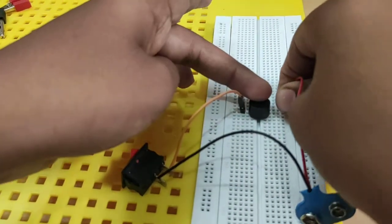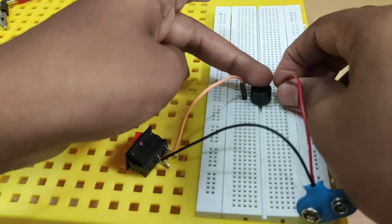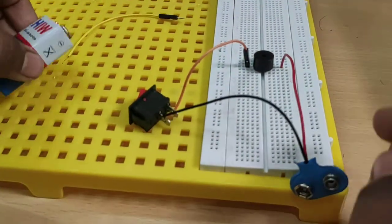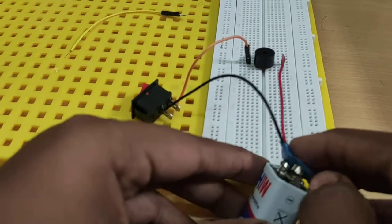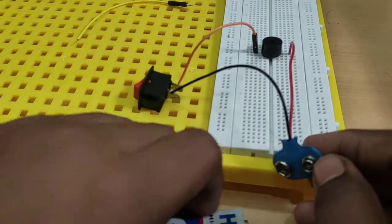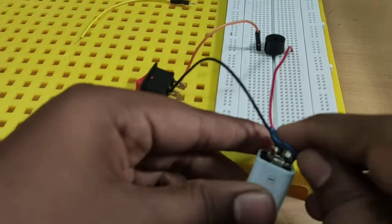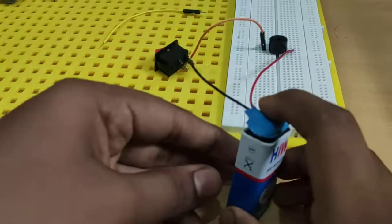And this 9 volt battery I will connect to it now. Switch lock the buzzer. Now till now, 9 volt battery is connected to this.